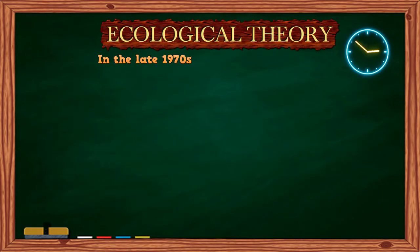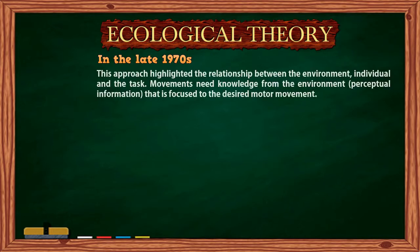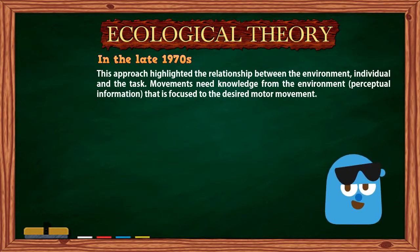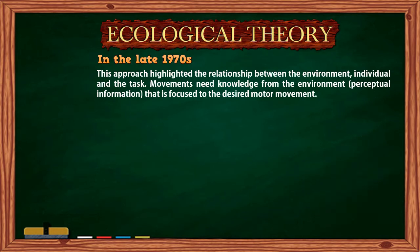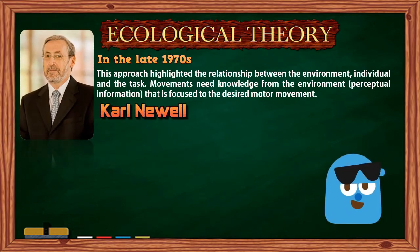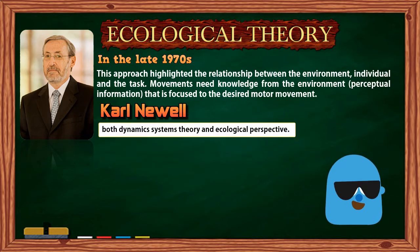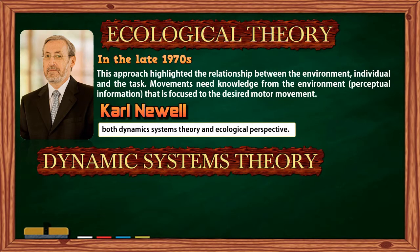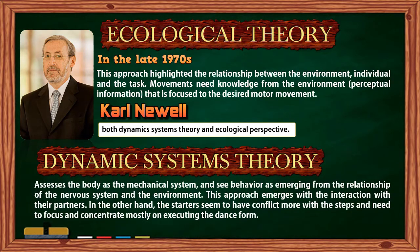Ecological theory. In the late 1970s, new theories regarding motor learning started to appear, emerging from the ecological perspective. This approach highlighted the relationship between the environment and the visual task. Movements need knowledge from the environment — perceptual information — focused on the desired motor movement. Well-known ecological motor theorist Karl Newell draws most of these theories from dynamic systems theory and ecological perspective. Dynamic systems theory assesses the body as a mechanical system and sees behavior as emerging from the relationship between the nervous system and the environment. More advanced dancers interact with their partners, while beginners focus more on executing the dance form itself.